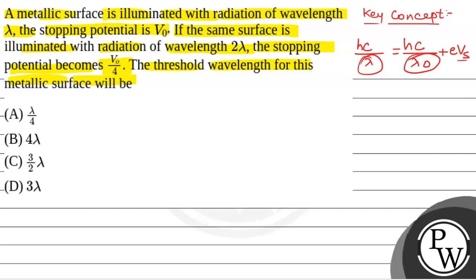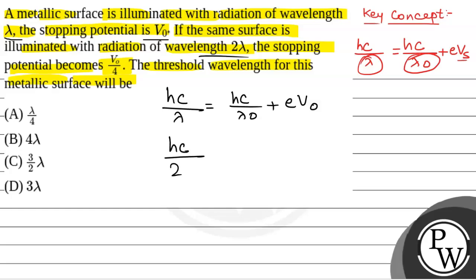Now, we have been given that when the wavelength of incident radiation is lambda, the stopping potential is V0. So we write the first equation: hc/λ = hc/λ0 + eV0. In the second equation, when the same surface is illuminated with wavelength 2 lambda, hc/2λ = hc/λ0 + eV0/4.